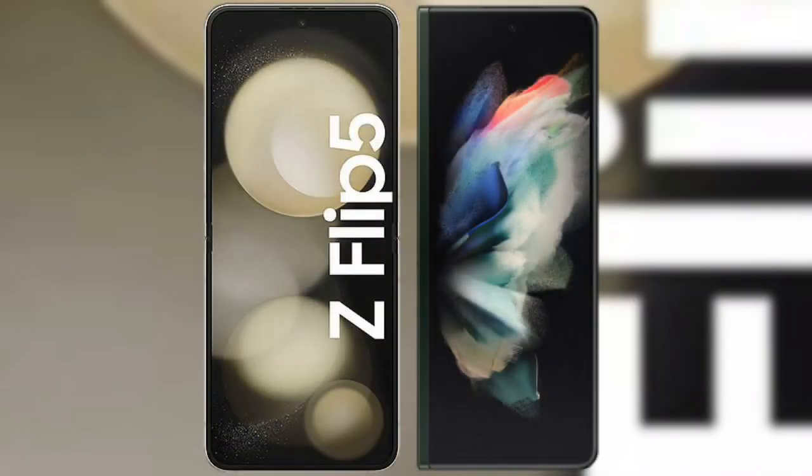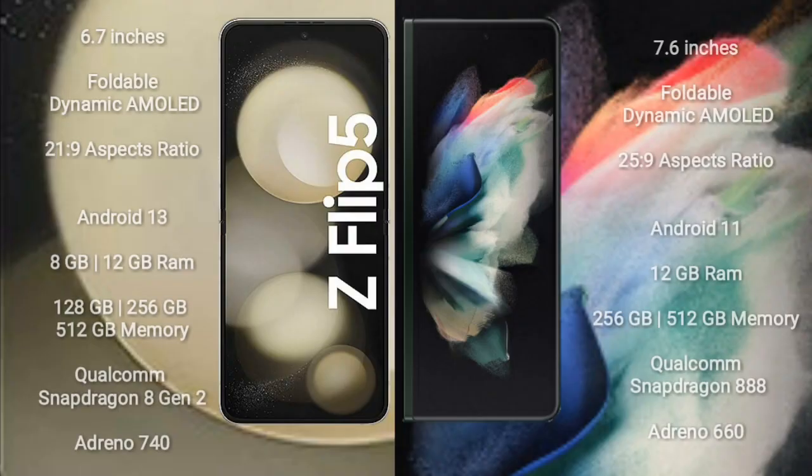I will compare the new Samsung Galaxy Z Flip 5 with Samsung Galaxy Z Fold 3. The Samsung Galaxy Z Flip 5 comes with a 6.7-inch foldable dynamic AMOLED display and aspect ratio of 22:9. The Samsung Galaxy Z Fold 3 comes with a 7.6-inch dynamic AMOLED display and aspect ratio of 25:9.